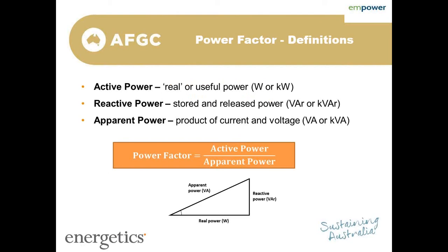The third type is apparent power — that's the product of the power and the currents, measured in volt-amps. You can see the power triangle diagram there, which explains the relationship between the three. You have real power at the bottom, reactive power on the right-hand side, and apparent power is the hypotenuse of that triangle. We're trying to minimize the reactive power so that the apparent power is lower. The relationship between active and apparent power is the Power Factor — it's the ratio of active to apparent power. This is the key definition.